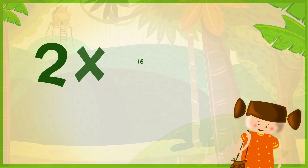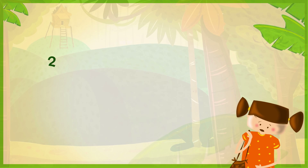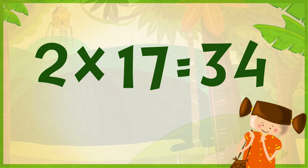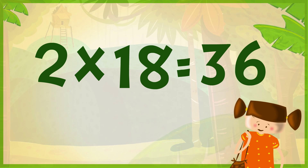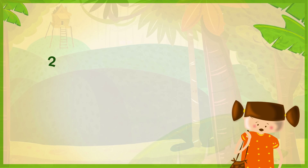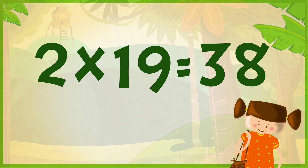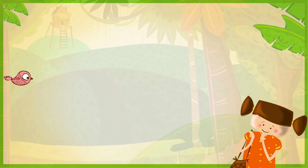2 x 16 is 32, 2 x 17 is 34, 2 x 18 is 36, 2 x 19 is 38, 2 x 20 is 14.